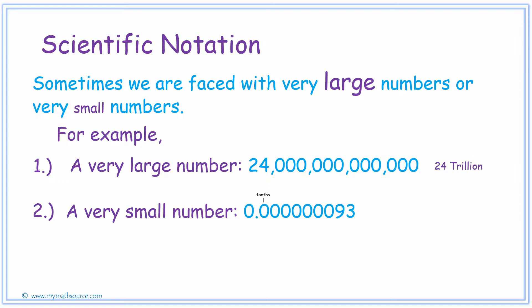After the tenths there is the hundredths, then the thousandths, ten thousandths, hundred thousandths, millionths, ten millionths, hundred millionths, and billionths. And if you remember how to read decimal numbers correctly,